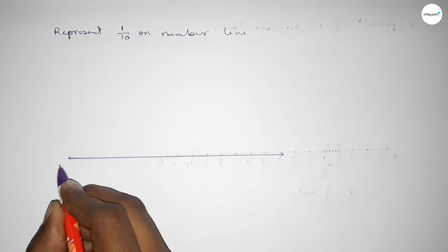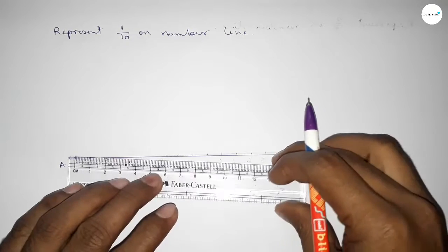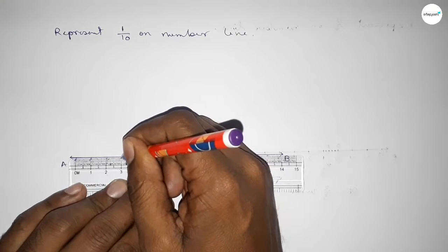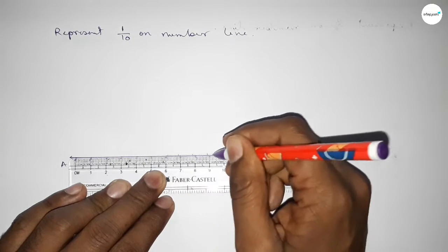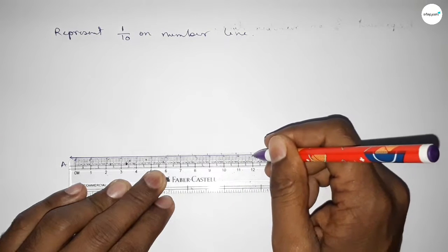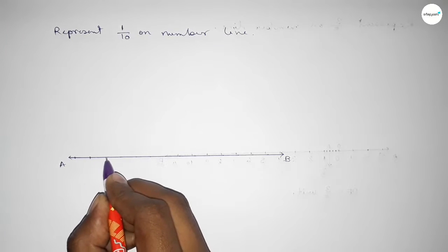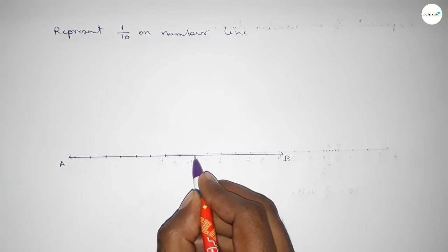here a line and taking arrow mark on both sides, and this is the AB line. Next we have to mark the numbers on the line by using scale. Again marking the numbers on the line with deep color to understand perfectly.